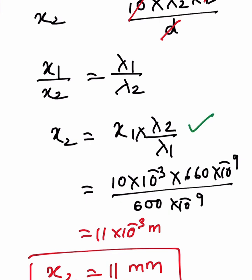x₁ is given as 10 millimeters, so x₂ = 10 × 10⁻³ × (660 × 10⁻⁹) / (600 × 10⁻⁹). The 10⁻⁹ terms cancel, and simplifying 660/600 gives 11/10, so x₂ = 11 × 10⁻³, which is 11 millimeters.